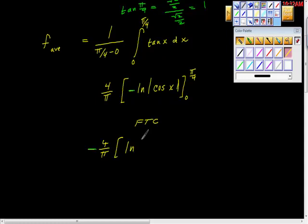So 4 over π times, well, ln(√2/2) minus ln(1). And if you're looking at that going, what the hell's going on here? Well, think about this for a second, that cos(π/4) is √2/2.